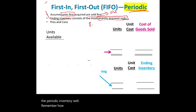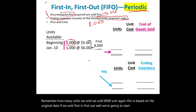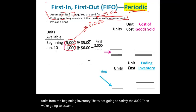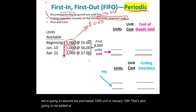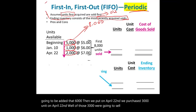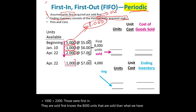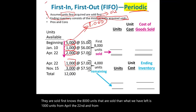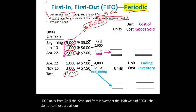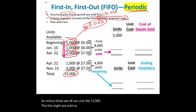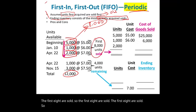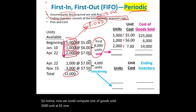Under periodic FIFO, we sell: 5,000 units from beginning inventory, then 1,000 units from January 10th (totaling 6,000), then 2,000 more from the 3,000 purchased April 22nd — that fills the 8,000 sold. What remains in ending inventory: 1,000 units from April 22nd and 3,000 units from November 15th, totaling 4,000 units. Cost of goods sold: 5,000 × $5 + 1,000 × $6 + 2,000 × $7 = $45,000.